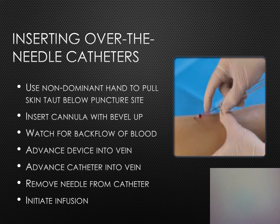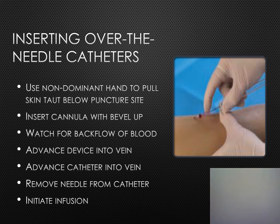Many IV devices have a button that automatically withdraws the needle, which is a safety feature. Connect the primary line tubing, saline lock, or short extension tubing with the saline lock to the catheter as ordered, then gently flush the catheter with normal saline and observe the vein. If swelling is noted near the catheter tip, the vein has not been cannulated and the process must be repeated. If no swelling is noted or the nurse observes saline traveling up the vein, cannulation was successful.